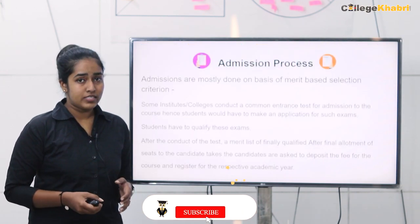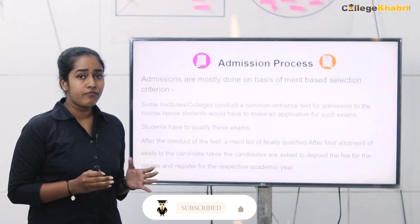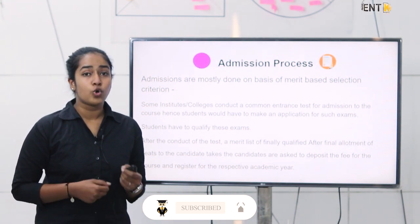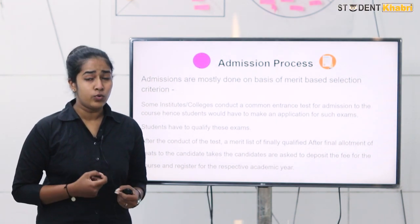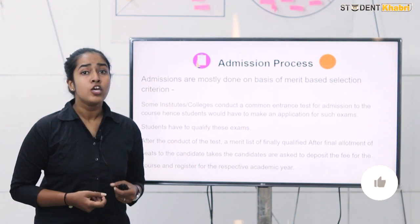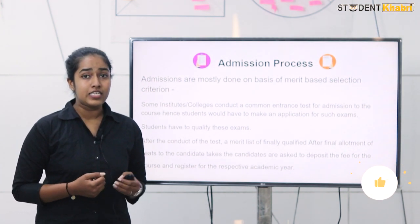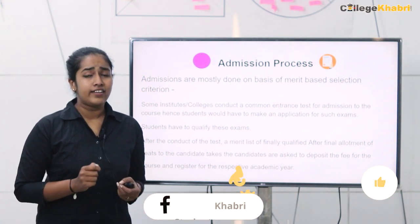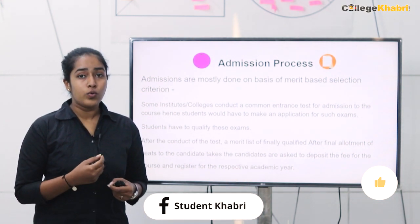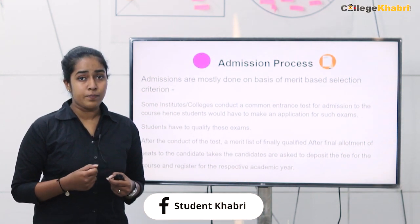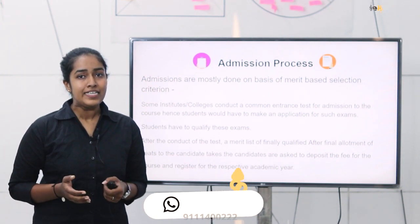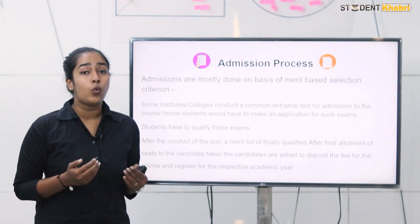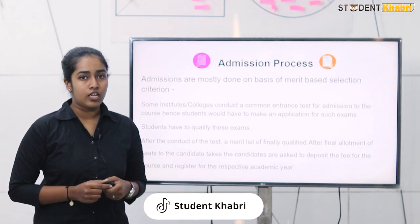When I talk about the admission process, there are basically merit lists through which admissions happen. In this admission process, colleges, institutes, and universities give their students a chance to go through entrance tests. When this entrance test happens, on the basis of the final merit list, the final students who qualify receive seats.